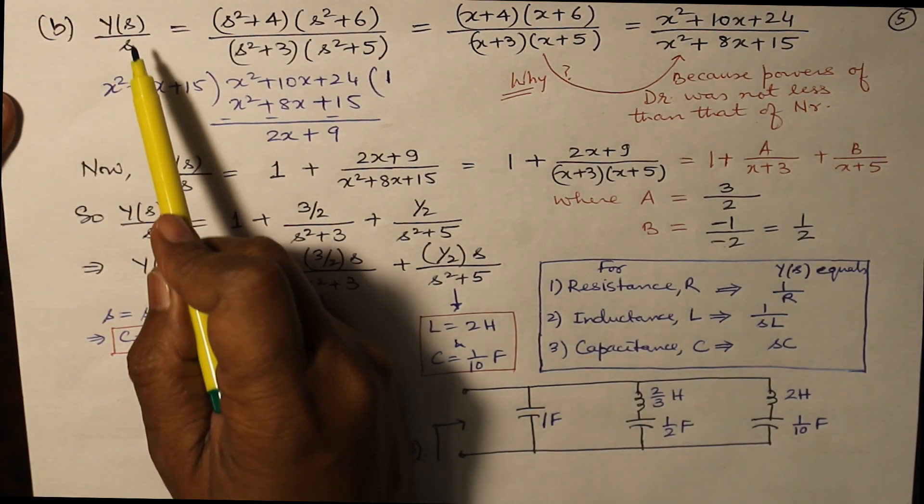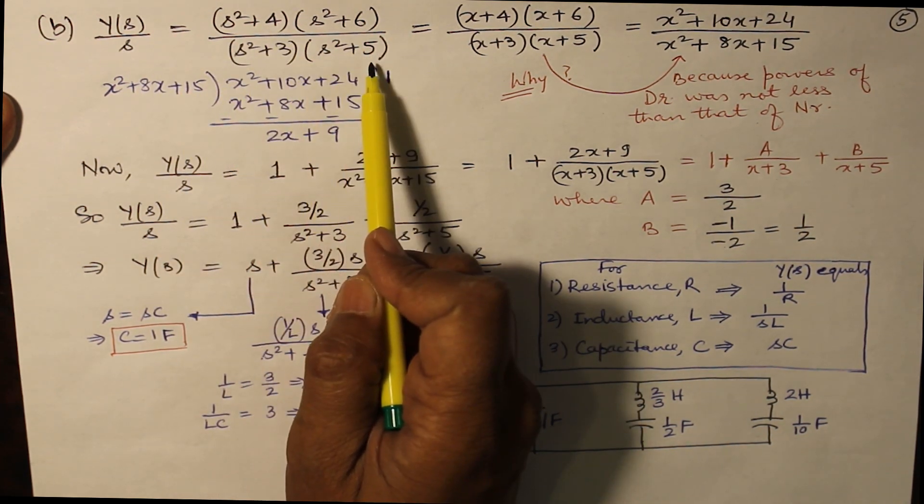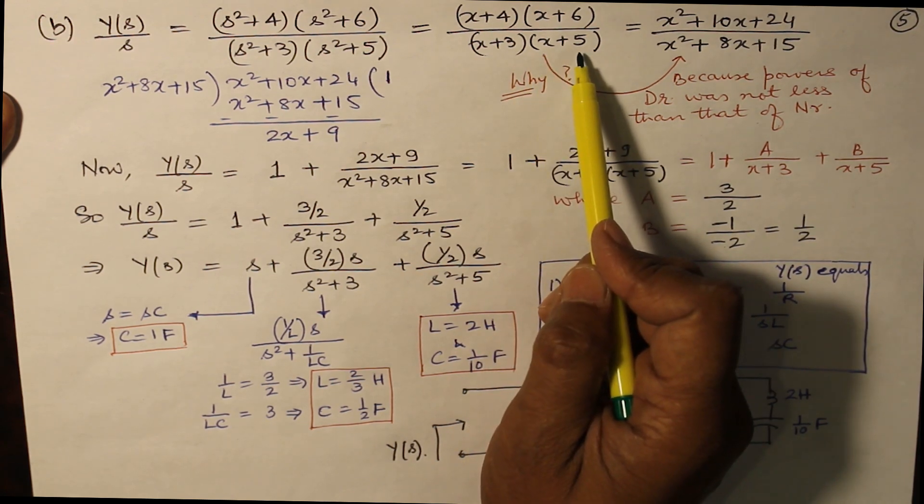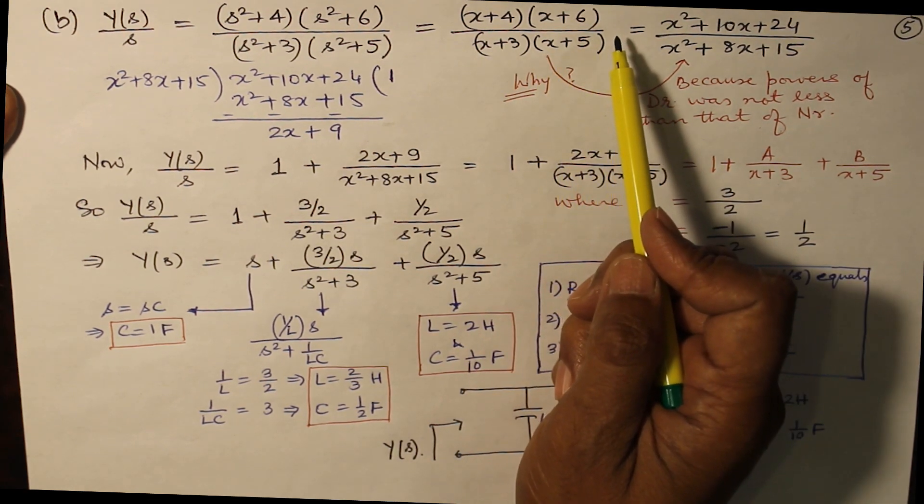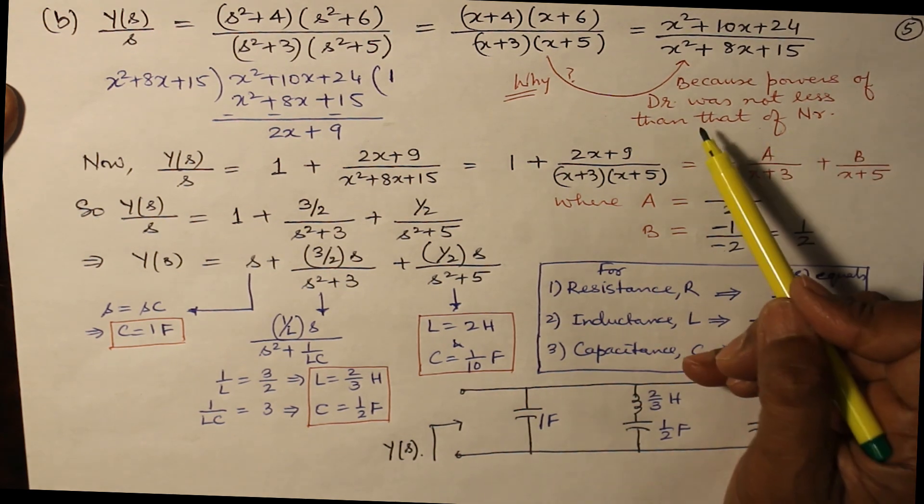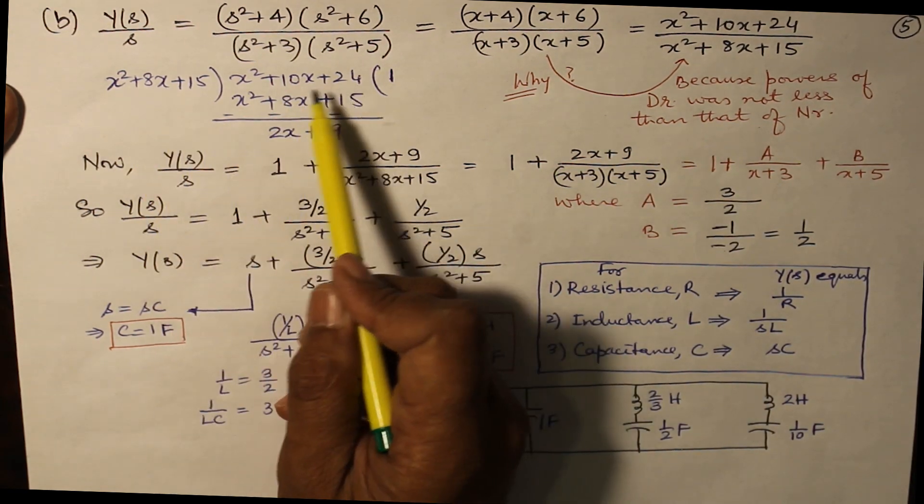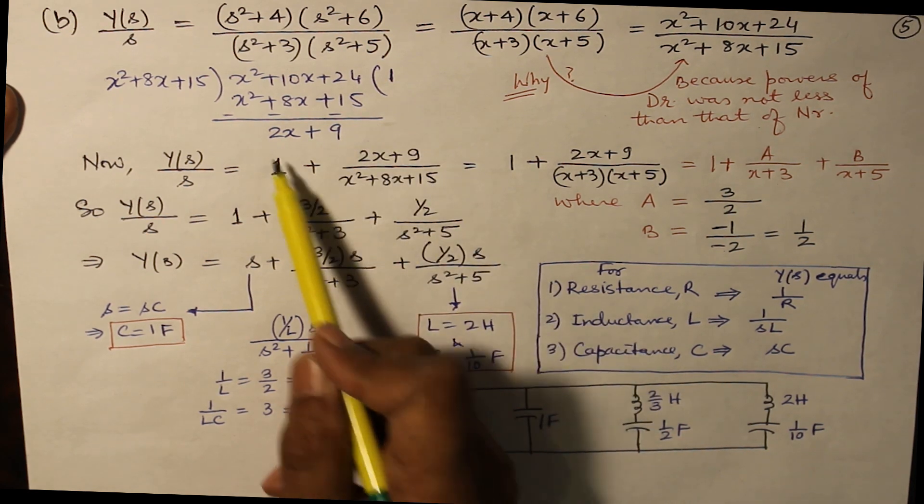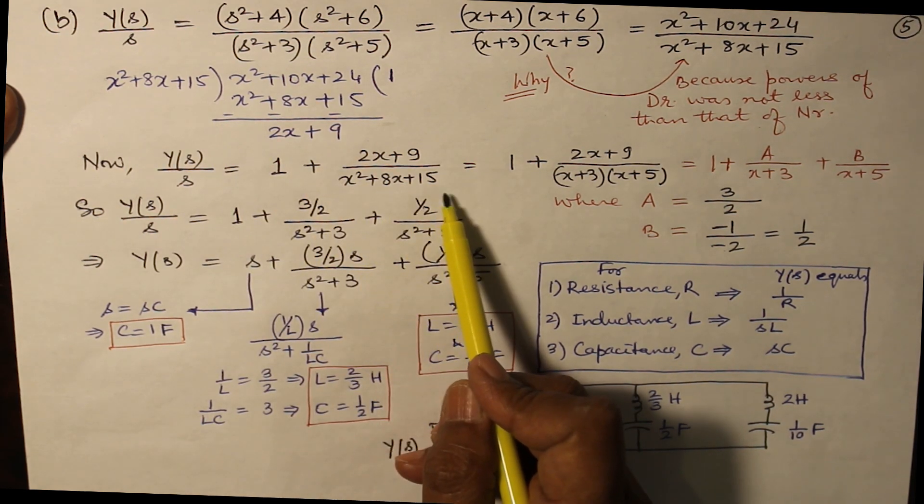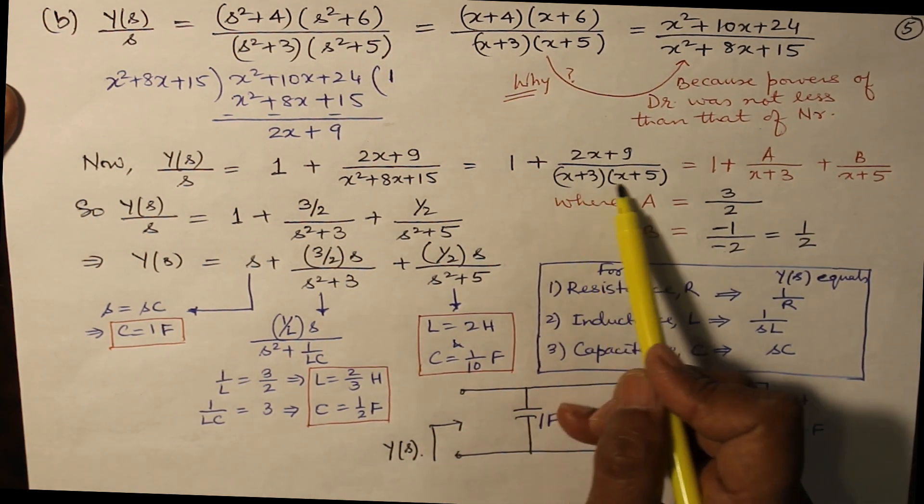Now let's do the second part, in which Y(s)/s as instructed earlier has been written as (s²+4)(s²+6) / [(s²+3)(s²+5)]. Replacing s² by x, we have (x+4)(x+6) / [(x+3)(x+5)] here. But we have to divide it. Why? Because the powers of the numerator and denominator are same. We should have the power of denominator as lesser than that of numerator. For that, we will divide once. Dividing it once, you have 1 plus remainder comes here: (2x+9) over divisor (x²+8x+15). So this gives you 1 plus this whole part. x²+8x+15 has been again written as (x+3)(x+5). And this part, you are going to split it into partial fraction.